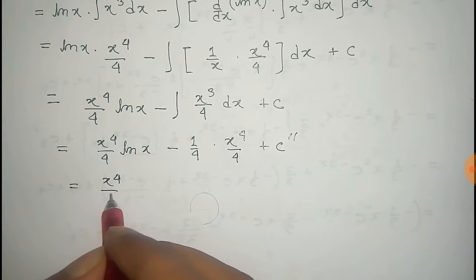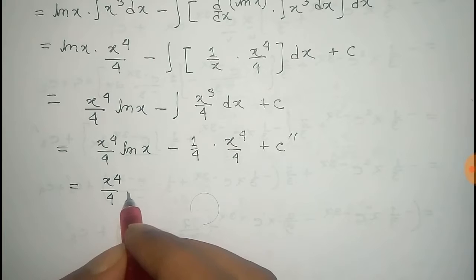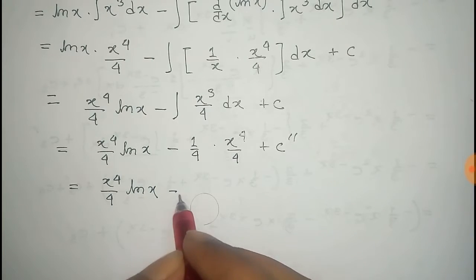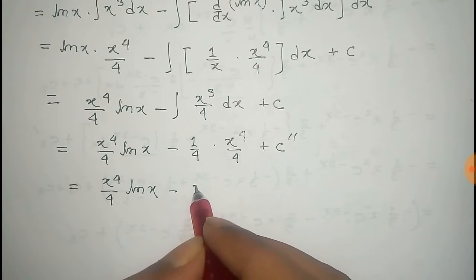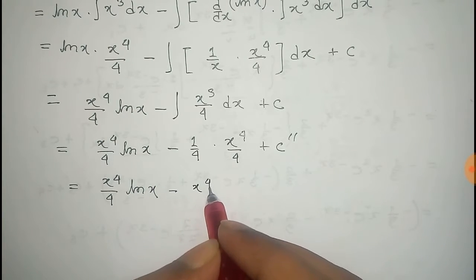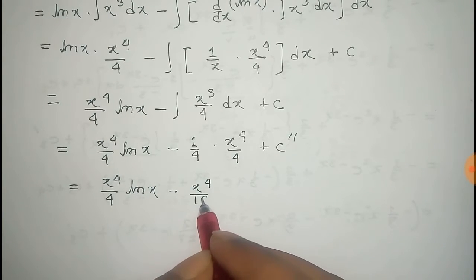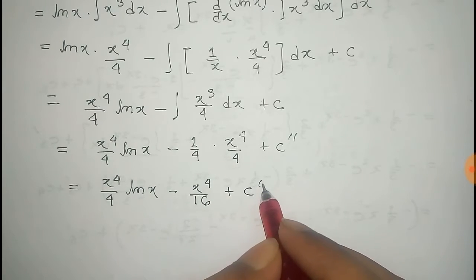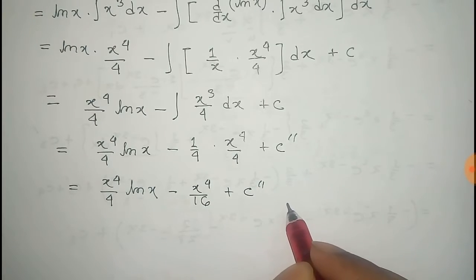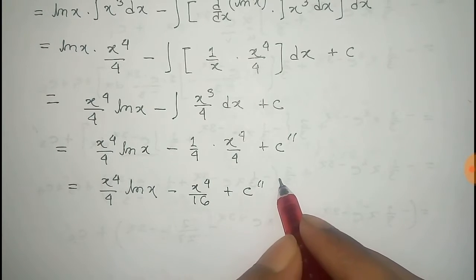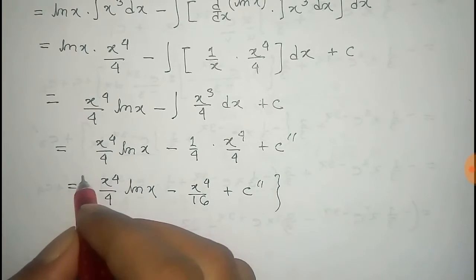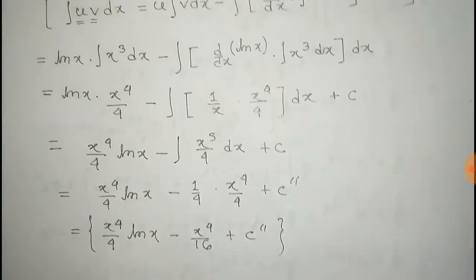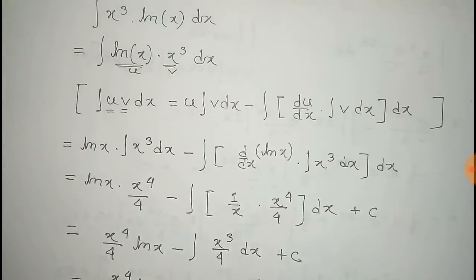Thus that's equal to x to the power 4 by 4 times log x, minus x to the power 4 by 16, plus constant c. This is the integral of x cube into log x.